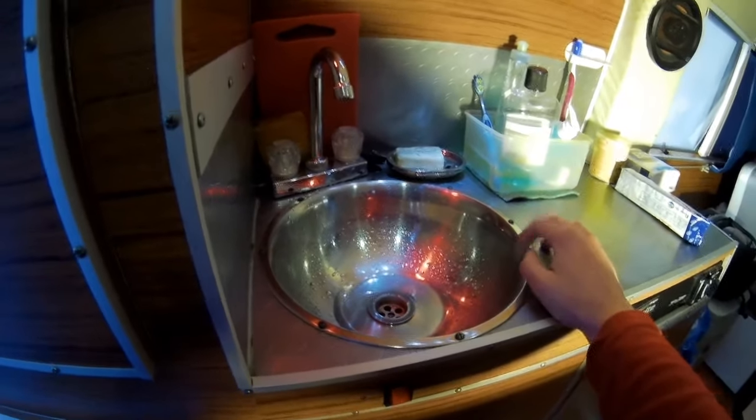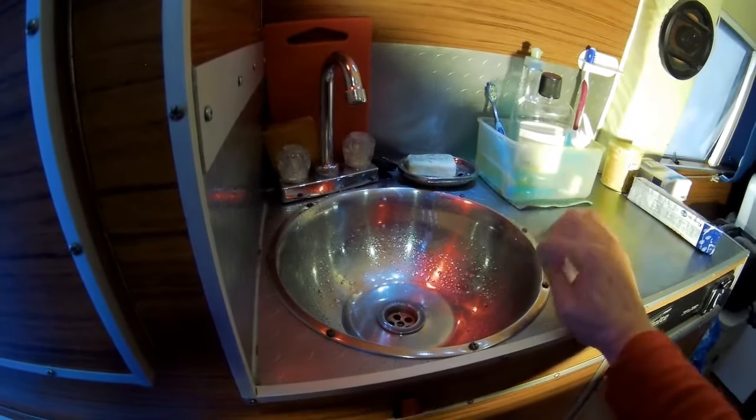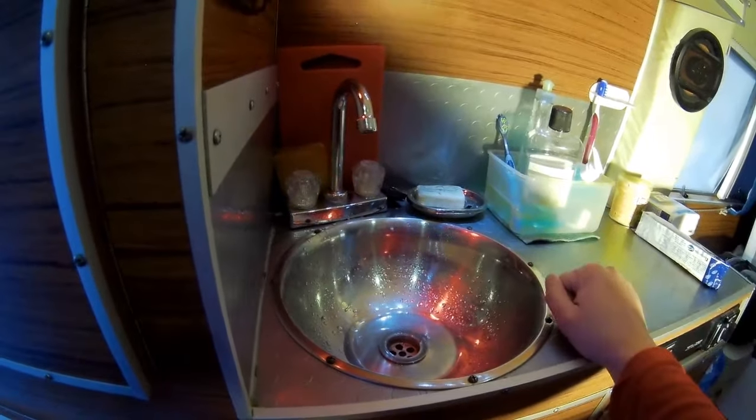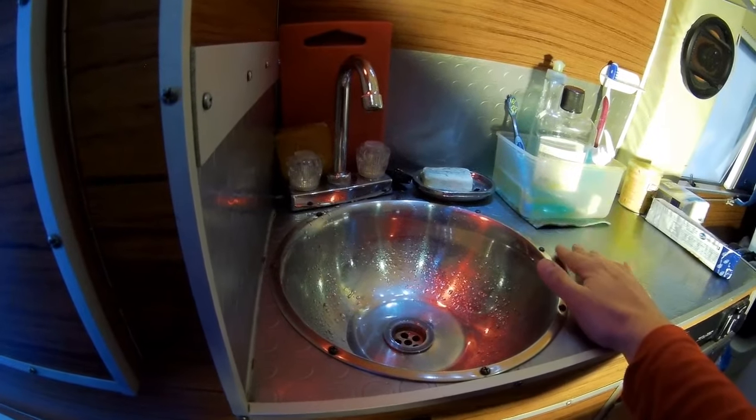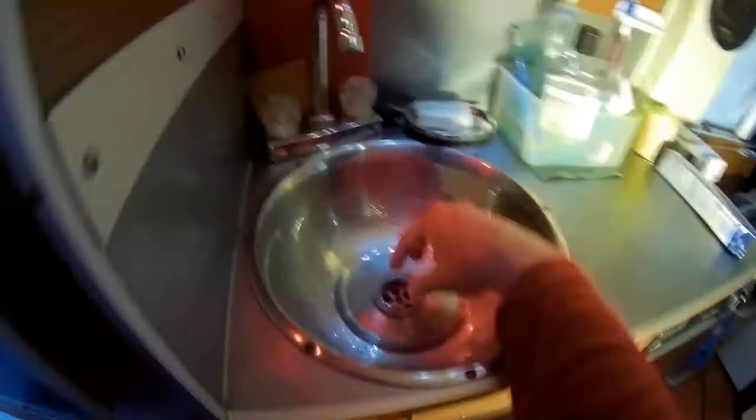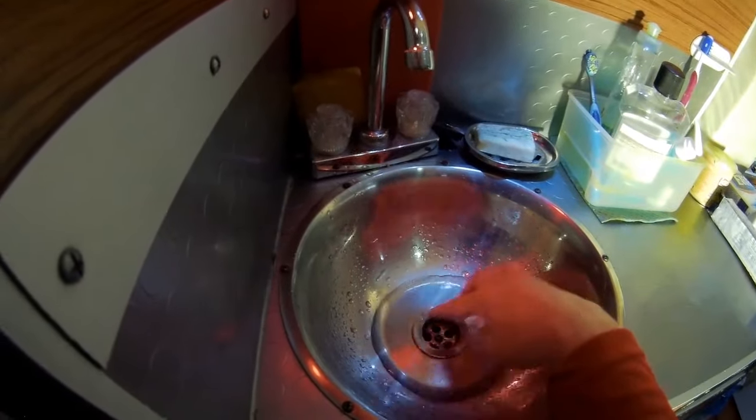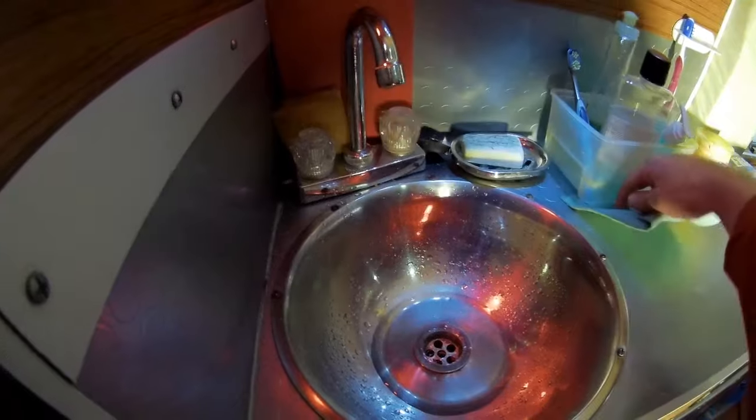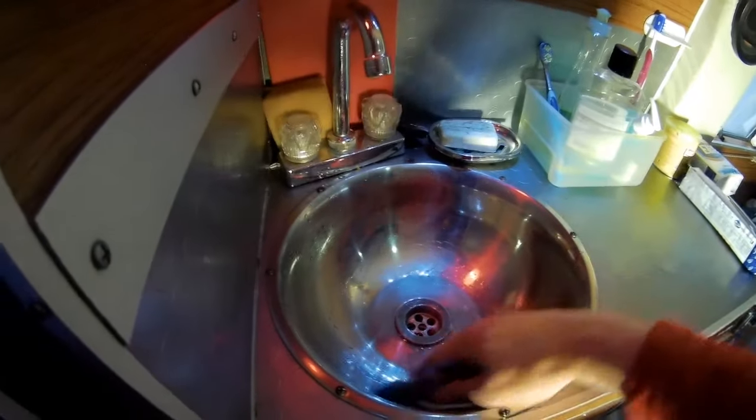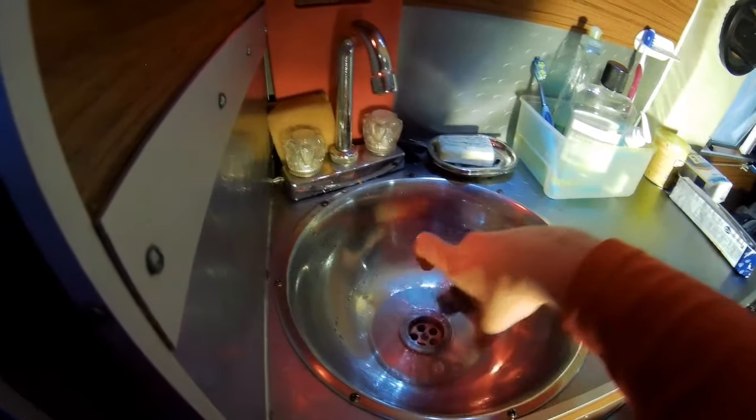The sink was made from a salad bowl, you can see it on another video. I use this salad bowl, about $180 US dollars, very cheap, and I drilled a hole here. As you can see, I always have a little bit of water but that's not a problem, you just use your sponge and that's all, so it's not a big deal.